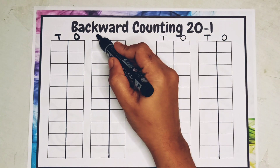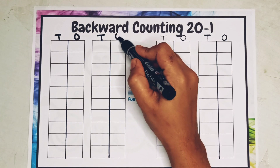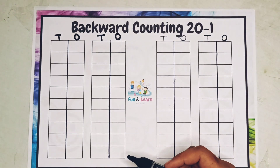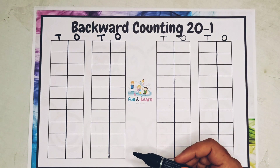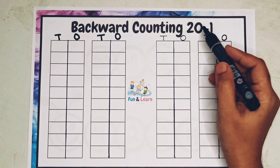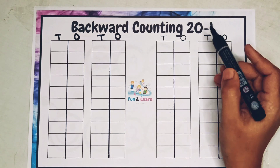Now what is 10s and 1s? 10s and 1s we write in school in our maths book. So when we write 20 to 1,